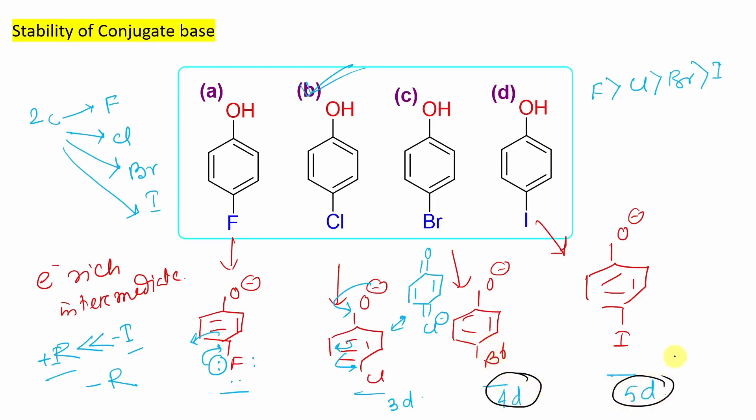True. But it is a little difficult also. Carbon case: second row, third row. Overlap 3d, second row, third row. Overlap is better because size matching is good. If you go to bromine, size matching will be less. And iodine will be further less. So in this case, that stabilization will be absent here.